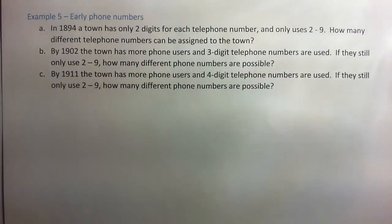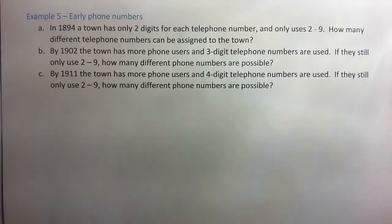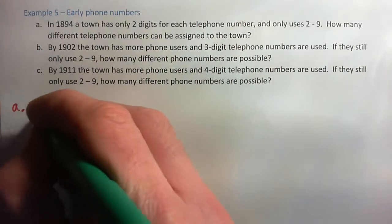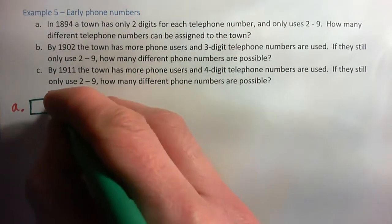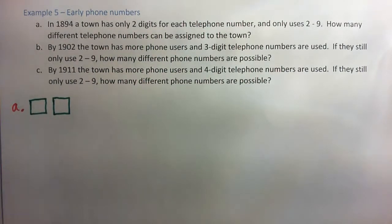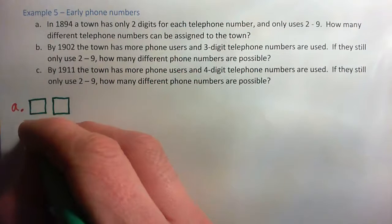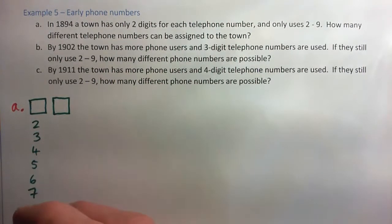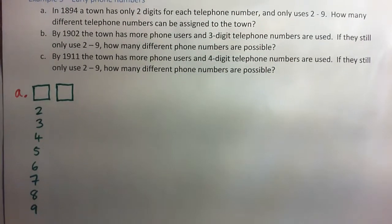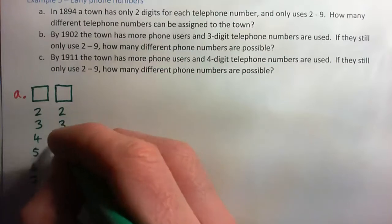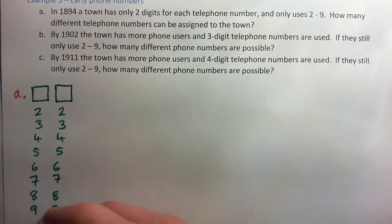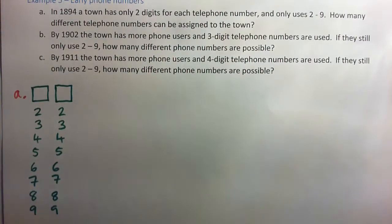Bear in mind that they did have letters in the phone number but the letters always corresponded to a number anyway. So essentially for part A, if you have a telephone number, your options were the digits 2, 3, 4, 5, 6, 7, 8, or 9 in the first part of your number, and then again 2 through 9 as the next part of your phone number. Please press pause and figure out how many unique telephone numbers you can create.